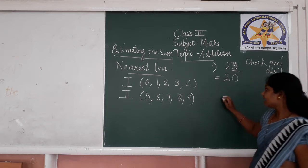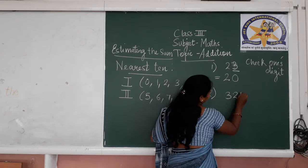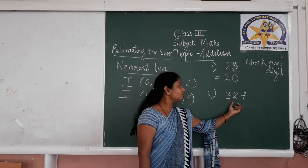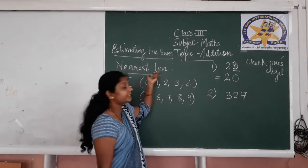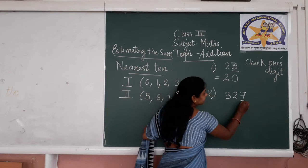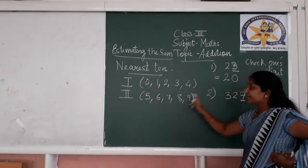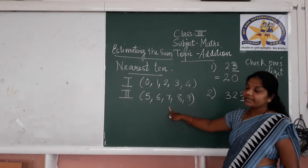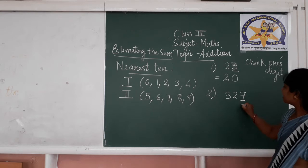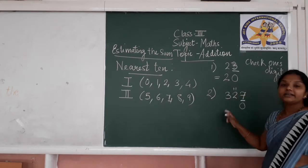Now let us take one more example. I will take a 3-digit number: three hundred and twenty-seven. You have to round off this number to the nearest 10. Check the digit at 1's place — it is 7. Check whether 7 is in Group 1 or Group 2. 7 is in Group 2. If it is in Group 2, what you have to do is write down 0 at its place and add 1 to the 10's digit.